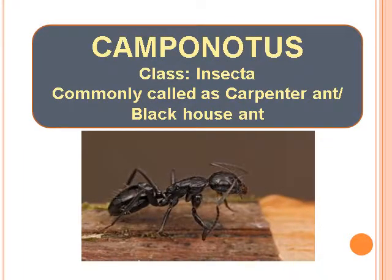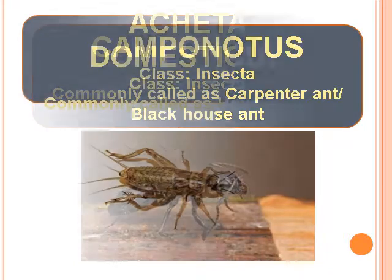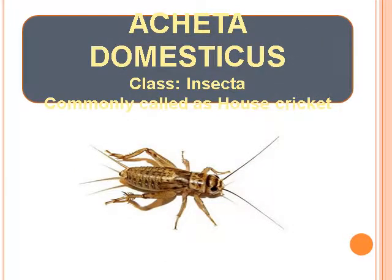Camponotus — Class Insecta, commonly called as Carpenter Ant or Black House Ant. Acheta Domesticus — Class Insecta, commonly called as House Cricket.